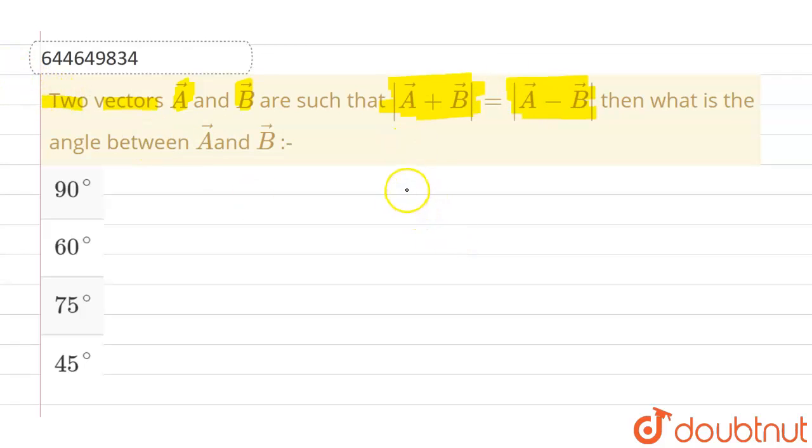So, what we are given? We are given that magnitude of A vector plus B vector, this is equals to magnitude of A vector minus B vector.